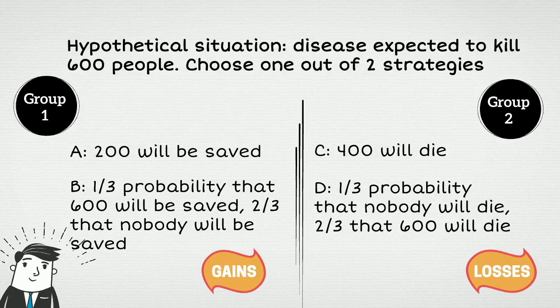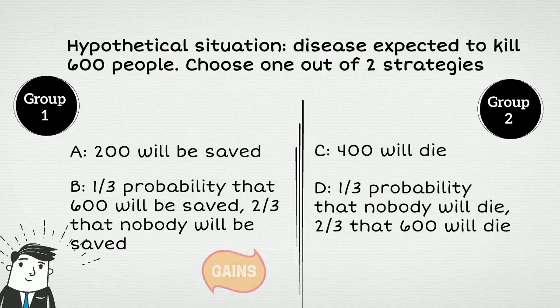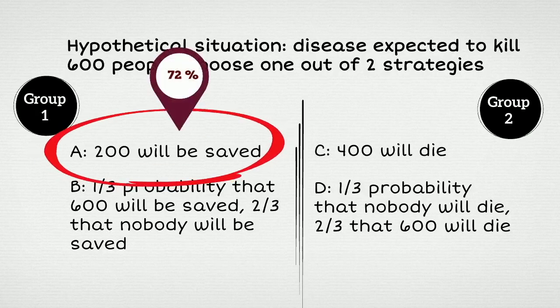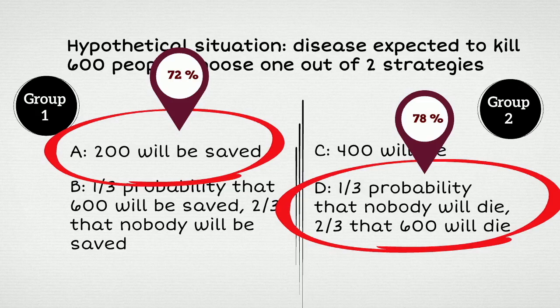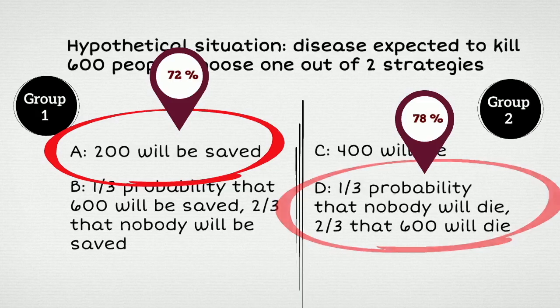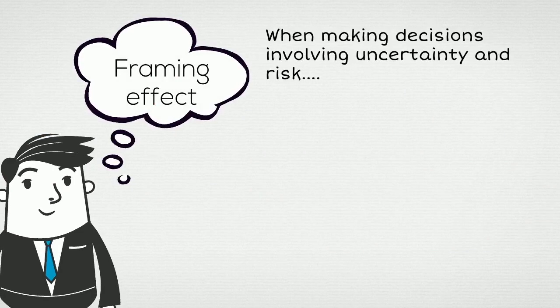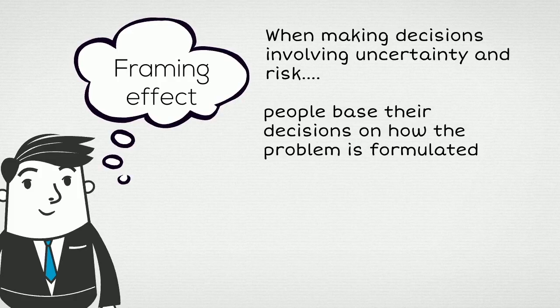In their classic experiment, Tversky and Kahneman observed a reversal of choice. 72% of participants in the first group chose strategy A, but 78% of participants in the second group chose strategy D. They called it the framing effect. The explanation is that when making choices under uncertainty and risk, people base their decisions on how the problem is formulated, which is irrelevant from the logical point of view. People avoid risks, but take risks to avoid losses.